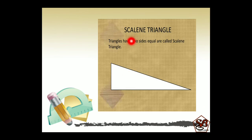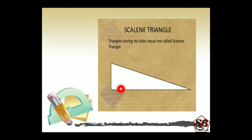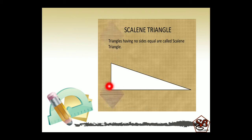The third one is scalene triangle. Triangles having no sides equal are called scalene triangles. You can clearly see in the image that this side is smaller than the other two sides — all three sides are of different lengths. Such types of triangles are called scalene triangles.